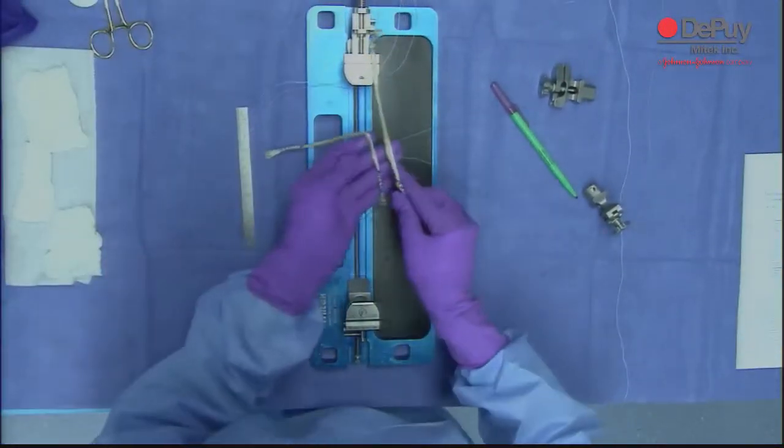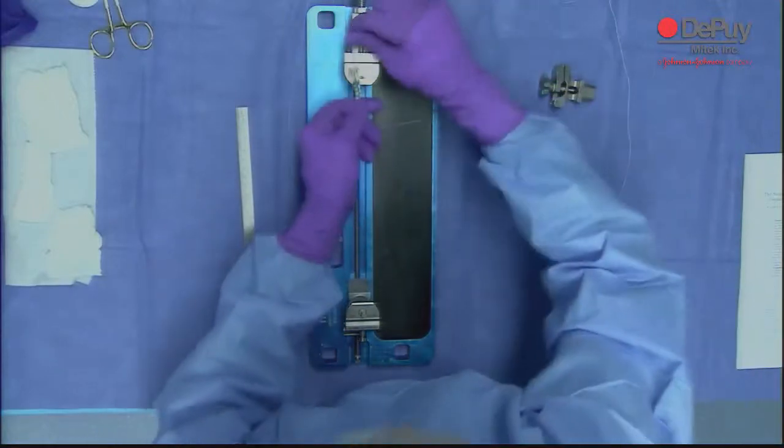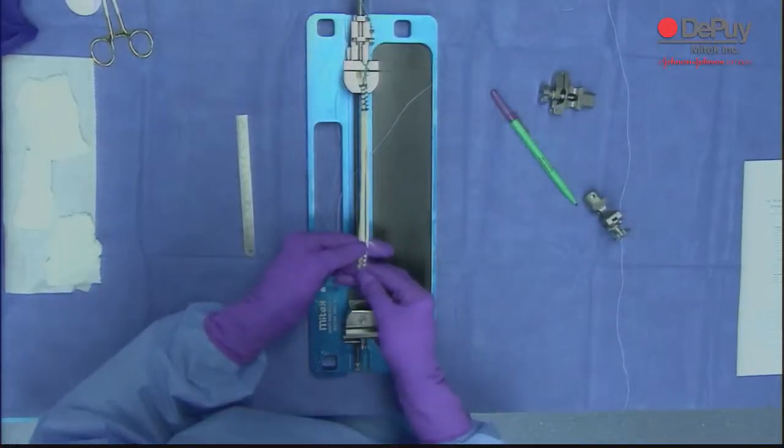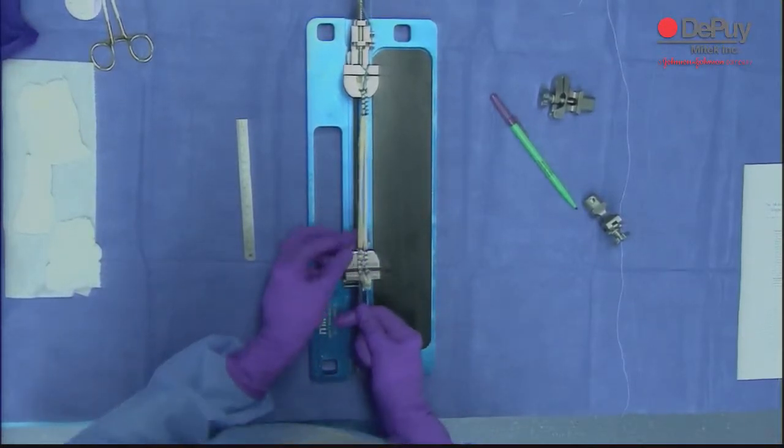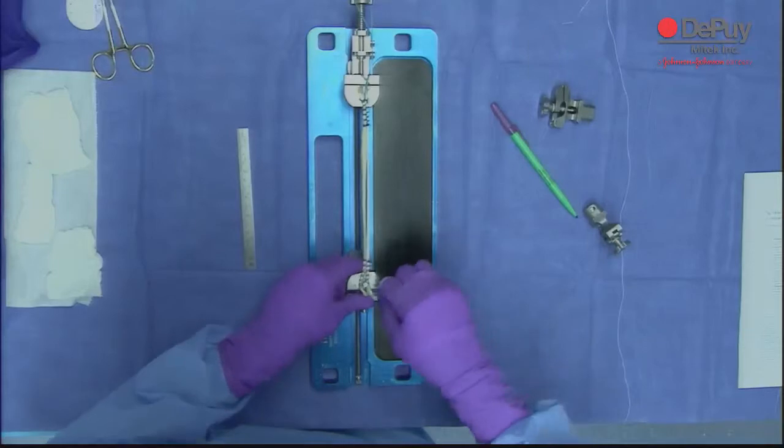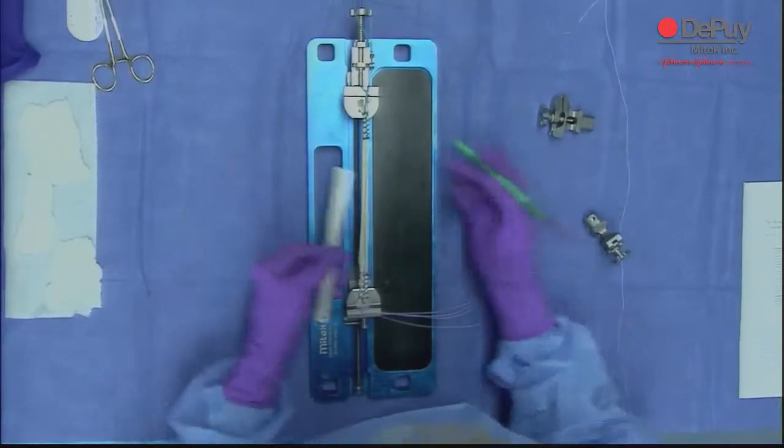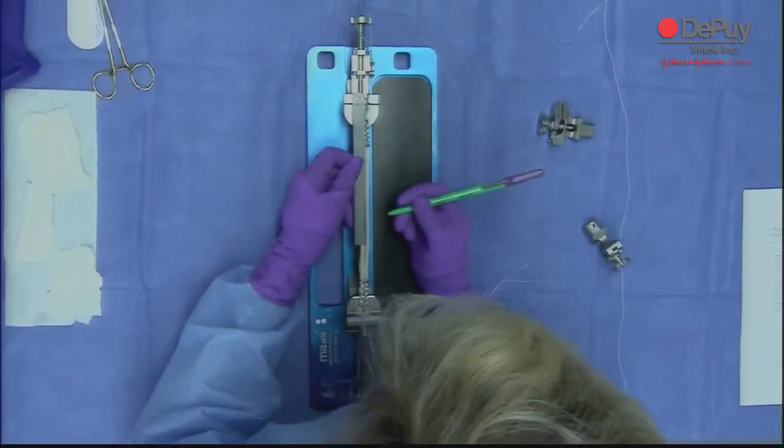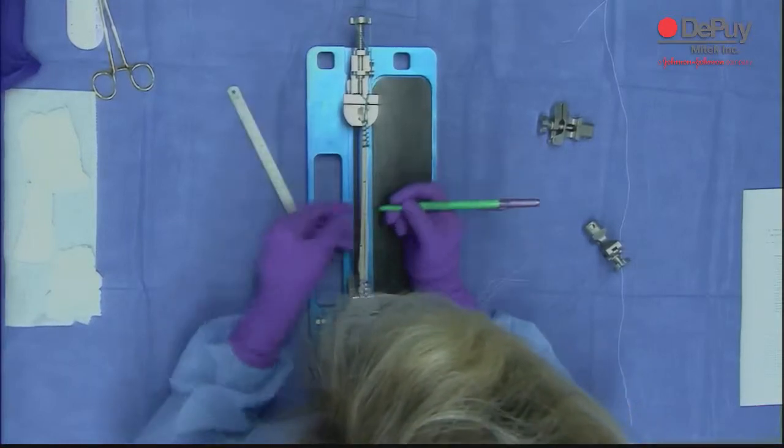As you can see, I color-coded this graft. I put the green on one end because you want two distinct ends of the graft. One's going to be your anteromedial and the other portion is going to be the posterolateral bundle. So now I have my middle mark, which is right there. I'm going to place that middle mark at 35. I'm going to mark it at 0 and 70. And now I'm ready to go.